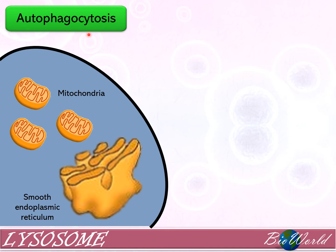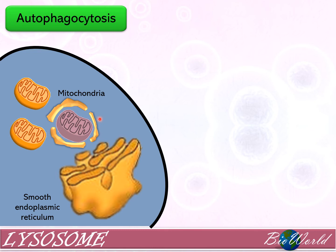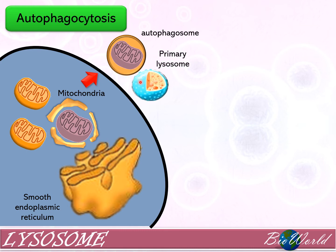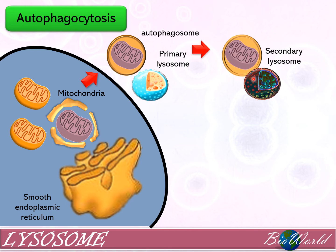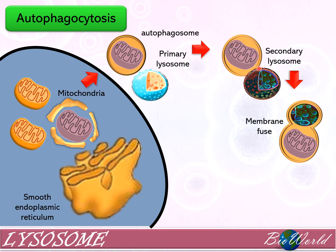Autophagocytosis is a process in which cells remove old and aged organelles. For example, if a mitochondrion is not functioning efficiently, it must be removed to make space for new mitochondria. To do that, cisternae from the smooth endoplasmic reticulum will begin to encircle the aged organelle, forming an autophagosome. Then a primary lysosome will attach itself to the autophagosome, stimulating the primary lysosome to convert into a secondary lysosome, causing the membranes of the autophagosome and the lysosome to fuse.